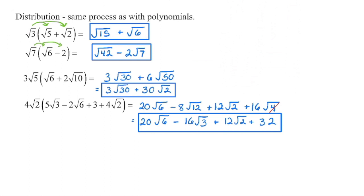Same thing for the second term: 1 times negative 2 is negative 2, and we have a radicand of 7. There is no radicand in the whole number term — you could think of it as the square root of 1. So 7 times 1 is just 7, and again, check to make sure there is no perfect square in the radicand that we can remove.